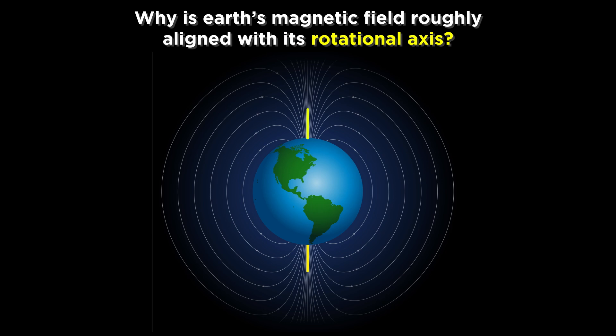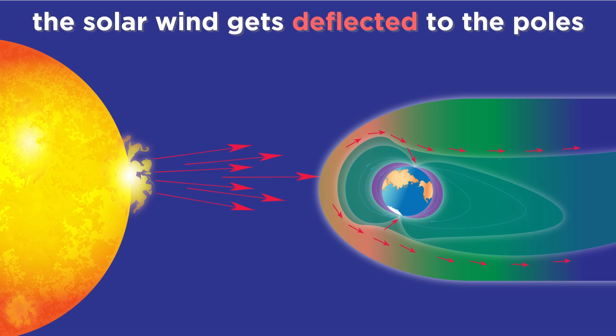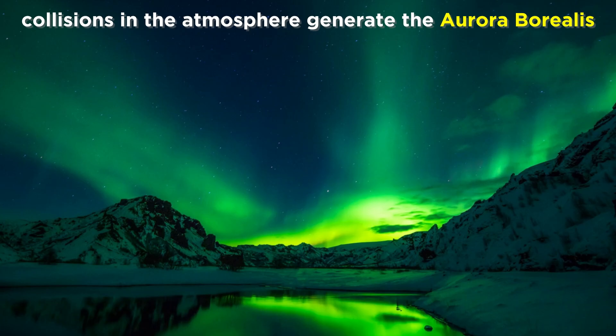But one question becomes apparent. Why is the earth's magnetic field aligned with its rotational axis? We know that the field lines emanate from the poles, which is why high energy charged particles from the sun get deflected out to the poles, where they collide with atmospheric particles and generate the aurora borealis. But why do the magnetic field lines point this way and not some other way? Perhaps Dr. Arno can help us understand.